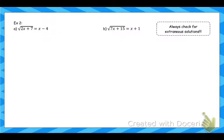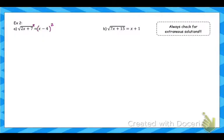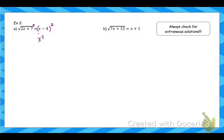Now we're going to use the same process in a slightly more difficult example. On this one, the square root is already by itself, so we go ahead and square both sides. But remember: when you square the right side, you are not squaring the individual terms — you are squaring that entire quantity as a whole. x minus 4 squared is x minus 4 times x minus 4, and you end up with x squared minus 8x plus 16.